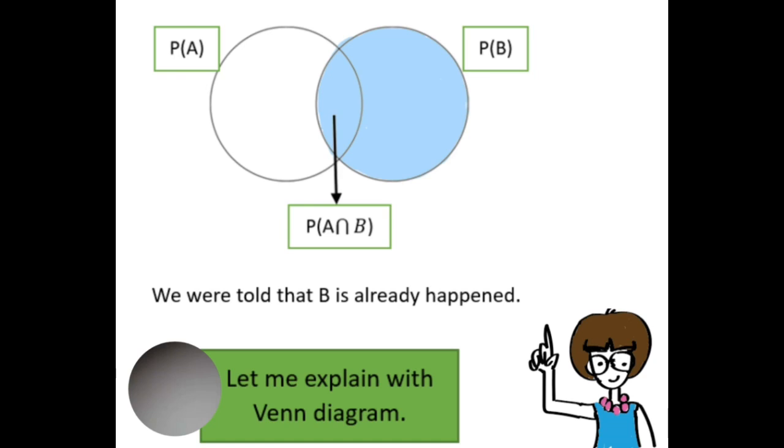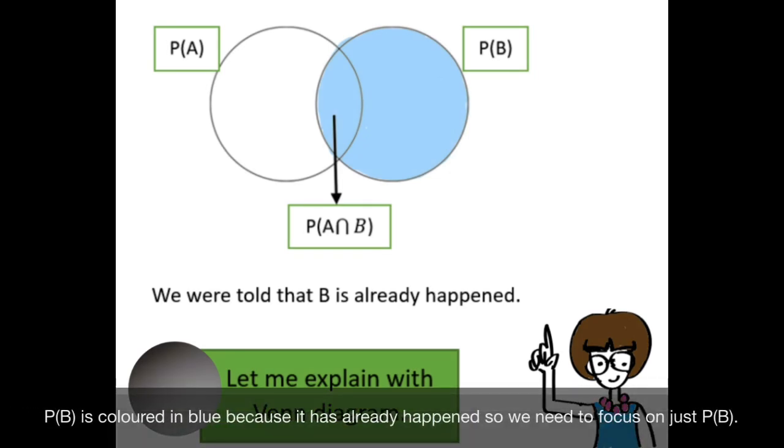Let me explain with a Venn diagram. As we know, on the left circle is probability of A. On the right, the blue one is the probability of B. Now, in the middle part is the probability of A and B, which is also we say A intersection B.